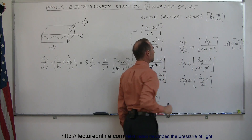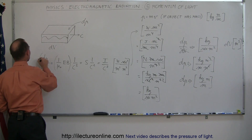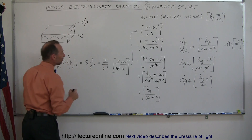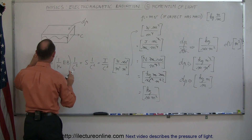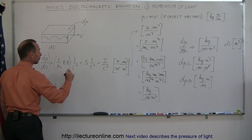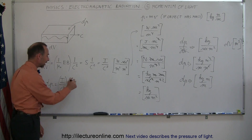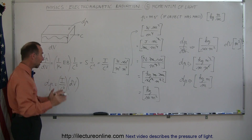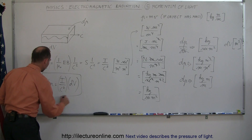Those are the exact same units as momentum for objects with mass. So by using unit equivalence, we've determined an equation that defines the momentum per unit volume in electromagnetic radiation, which equals I divided by c squared. To find the momentum within a certain volume of space, we multiply momentum per unit volume by the volume, giving dp equal to I divided by c squared, multiplied by dV. Take the intensity of light, divide by c squared, multiply by a volume, and you get the momentum contained within that light.